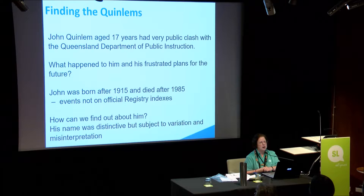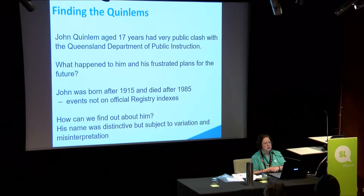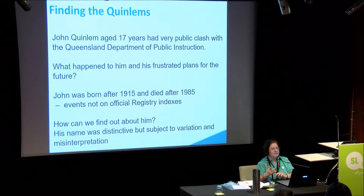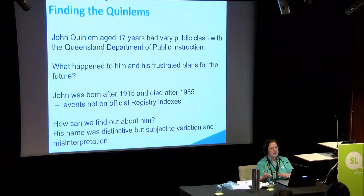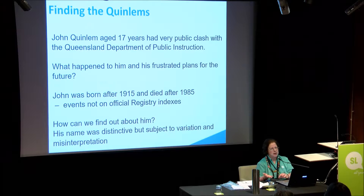One of the queries we've looked at is John Quinlum. John Quinlum in 1949 was 17 years of age. He'd finished school at the Grammar, and with the recommendation of the Grammar Principal, applied for a teaching fellowship. He'd been born in Queensland, his mother had been born in Queensland, he was a top student, a good sportsman, and passed everything with flying colours — until the interview. What they saw was a Chinese face, and then he missed out.